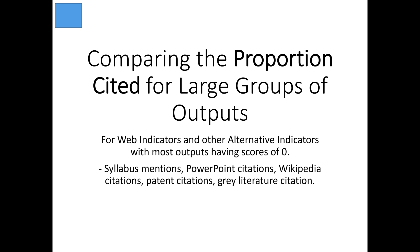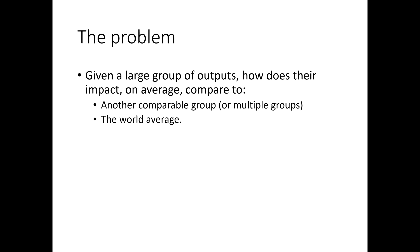This is an alternative to the MNLCS. The MNLCS can still be used, but this is an alternative that focuses on the proportion cited. The problem is: given a large group of outputs, how does their impact on average compare to the world average or another comparable group? The same problem as for the MNLCS.